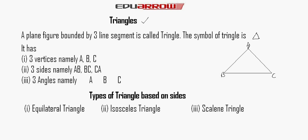Vertices A, B, and C. Three sides, namely AB, BC, and CA. And three angles, namely Angle A, Angle B, and Angle C.